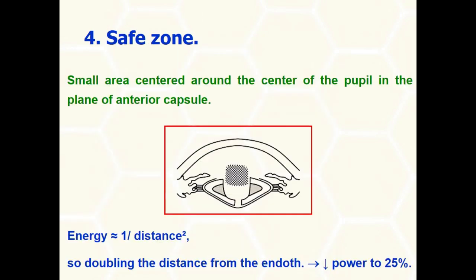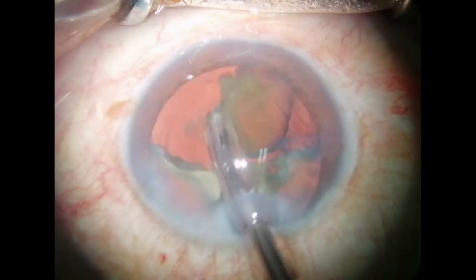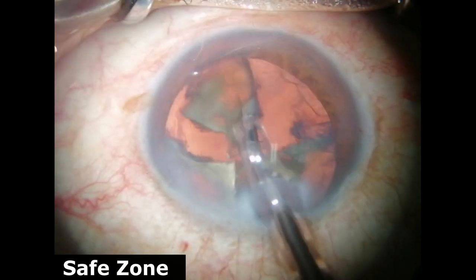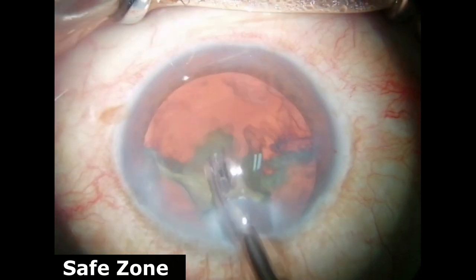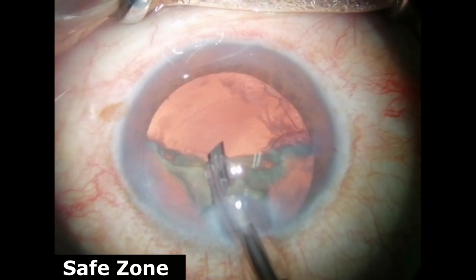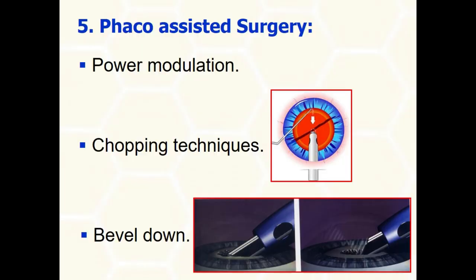Always keep away from the corneal endothelium — this dramatically reduces endothelial damage. Keep emulsification within the confines of the safe zone: a small area in the center of the pupil at the level of the anterior capsulorhexis, where you are away from the corneal endothelium, the posterior capsule, and the rhexis edge. Minimize ultrasonic energy by using power modulation and new technologies such as torsional or elliptical phaco. Chopping techniques utilizing mechanical forces are more endothelium-friendly than ultrasonic-dependent techniques such as divide and conquer.